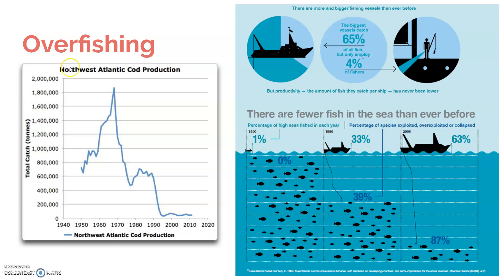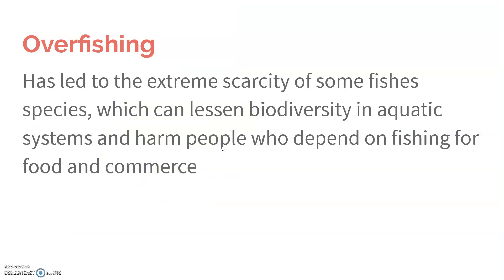This is an example of a fish that has been overfished: the northwest lingcod. Their catch spiked in about 1965 when they were catching so many fish, but then because they were catching so many, that population went way down. They can no longer catch at a really significant level anymore because the population has essentially collapsed.